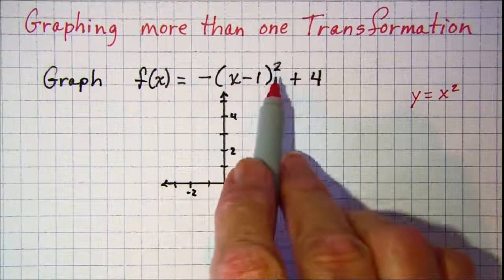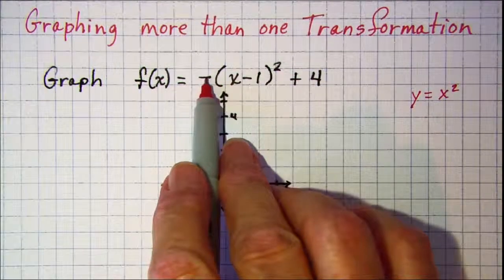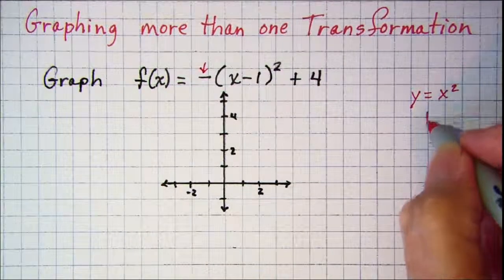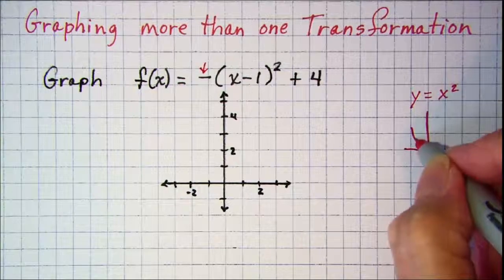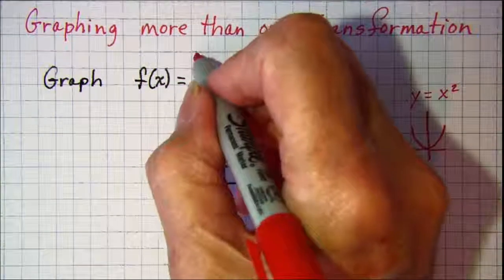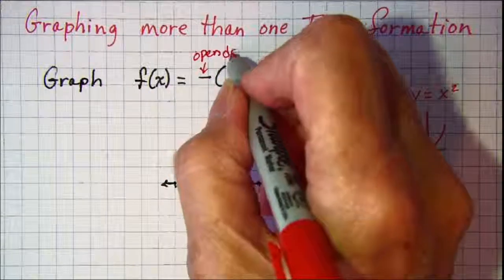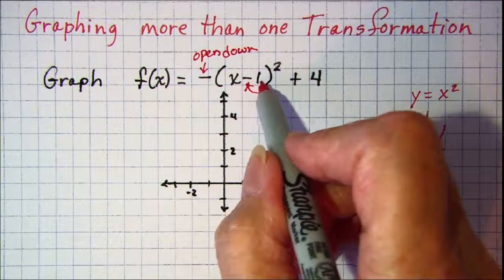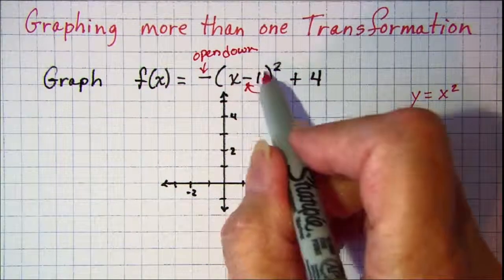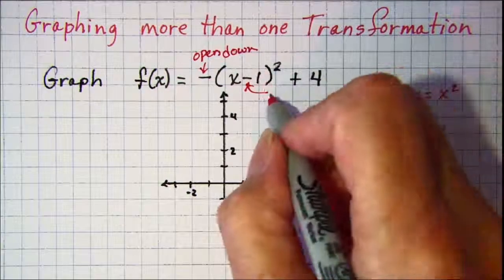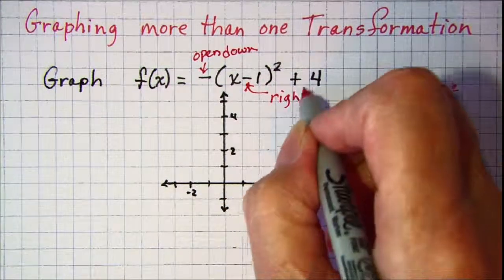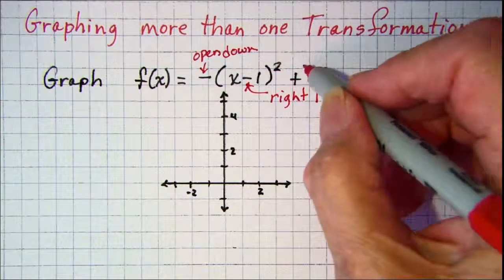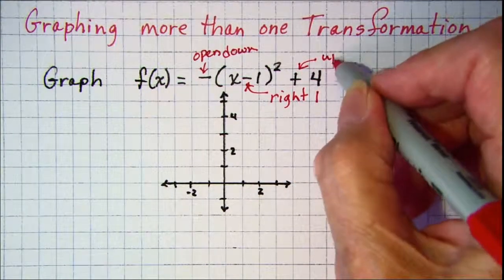The transformations we can see: this negative out in front means that instead of opening up like our basic graph normally does, this will open down. This minus one inside the function means we're going to go right 1, and this plus 4 on the end means we're going to go up 4.